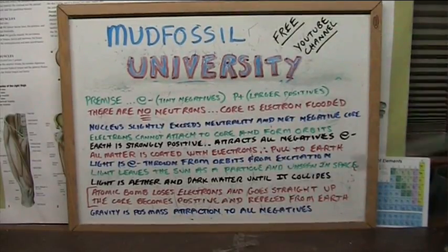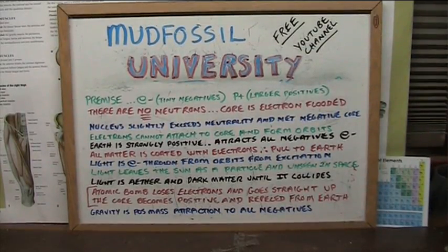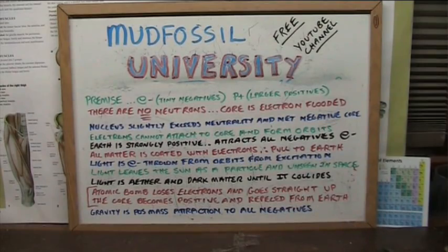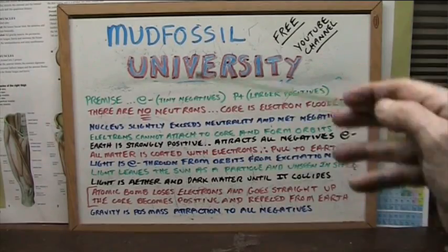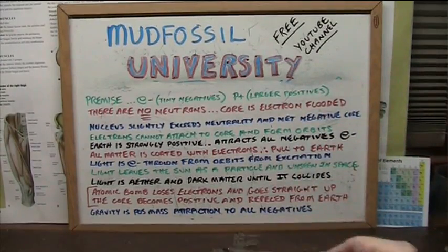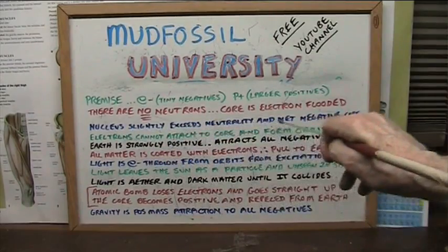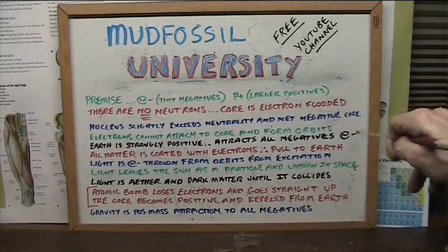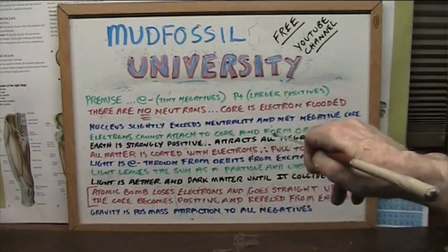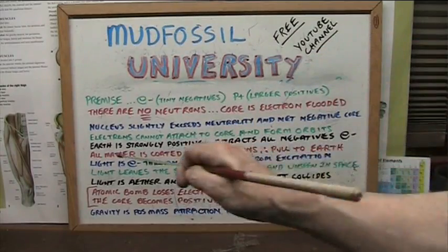The center of every atom is a strong positive with negatives surrounding it. Those negatives become a little excessive and keep electrons — the ones coming in — in their orbits. That's what creates the quantum mechanics. Nucleuses will always slightly exceed neutrality, and all incoming negatives are kept away by a net negative core. Electrons cannot attach to that core and form their orbits, just like we saw with the magnets.